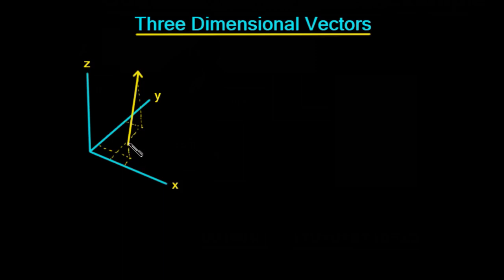So this point here is going to have three components—an x, a y, and a z component. And the same for the other side of this vector: you have to come a distance x, along a distance y, and up a distance z in order to get to this point.